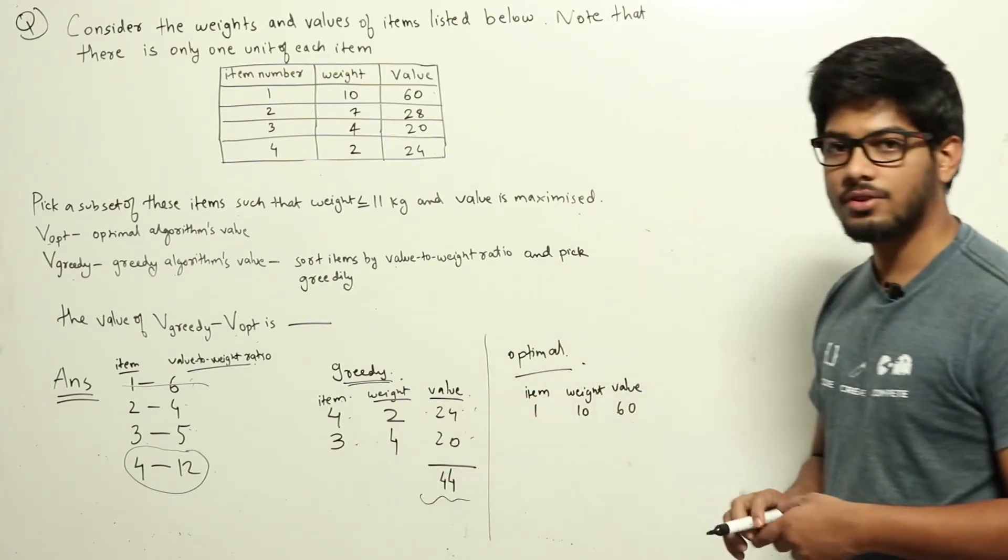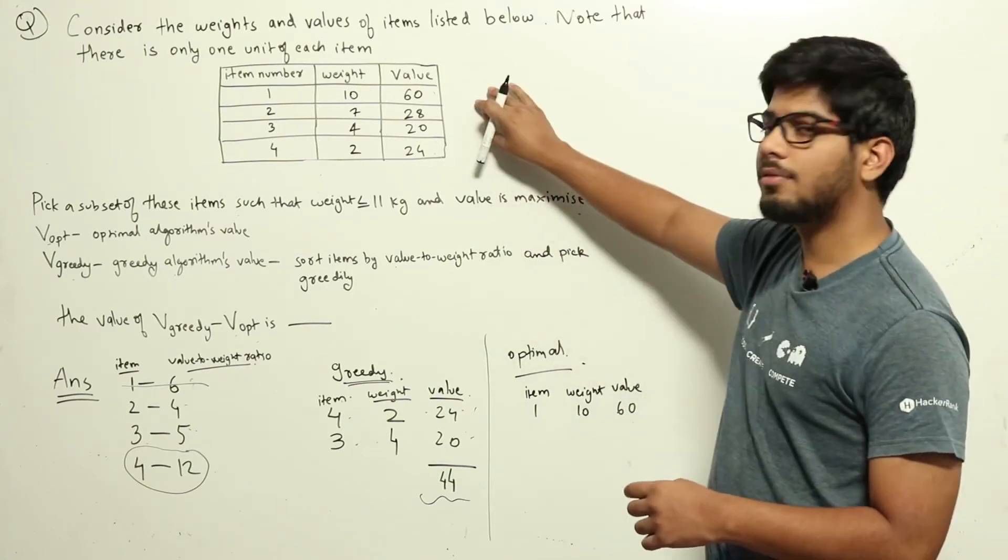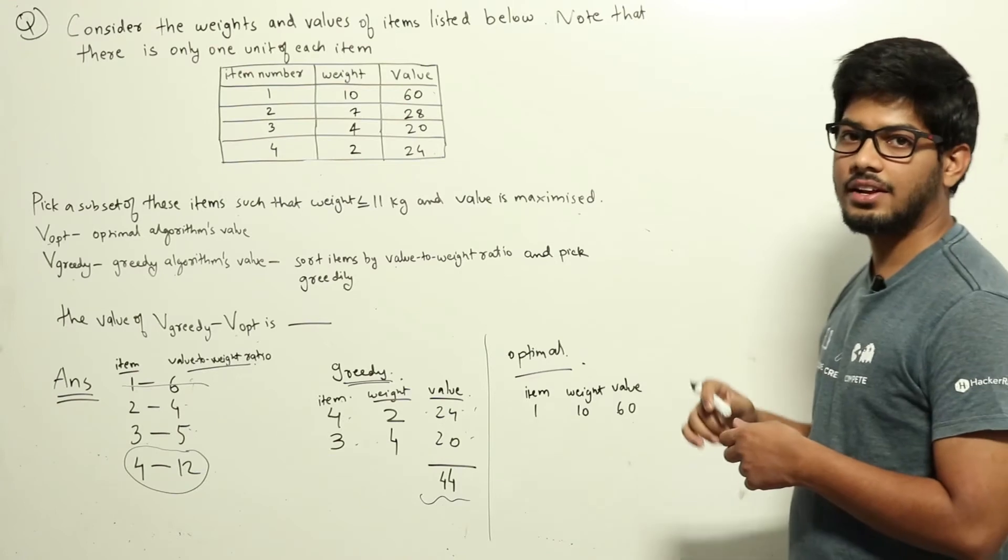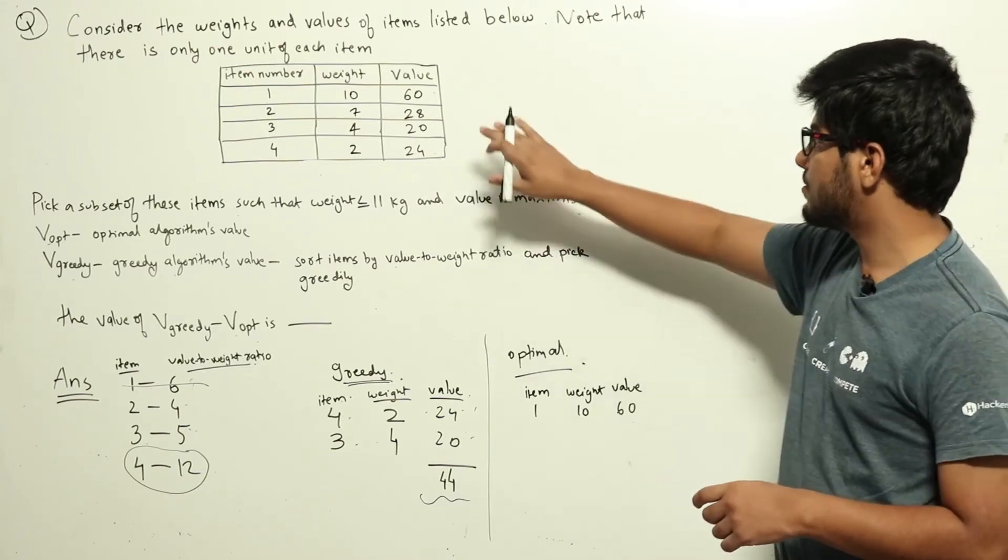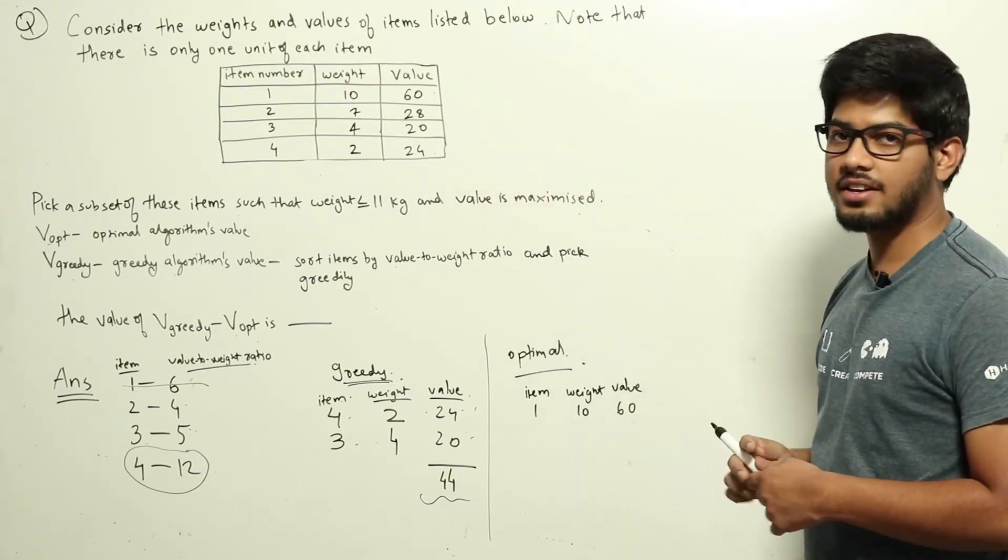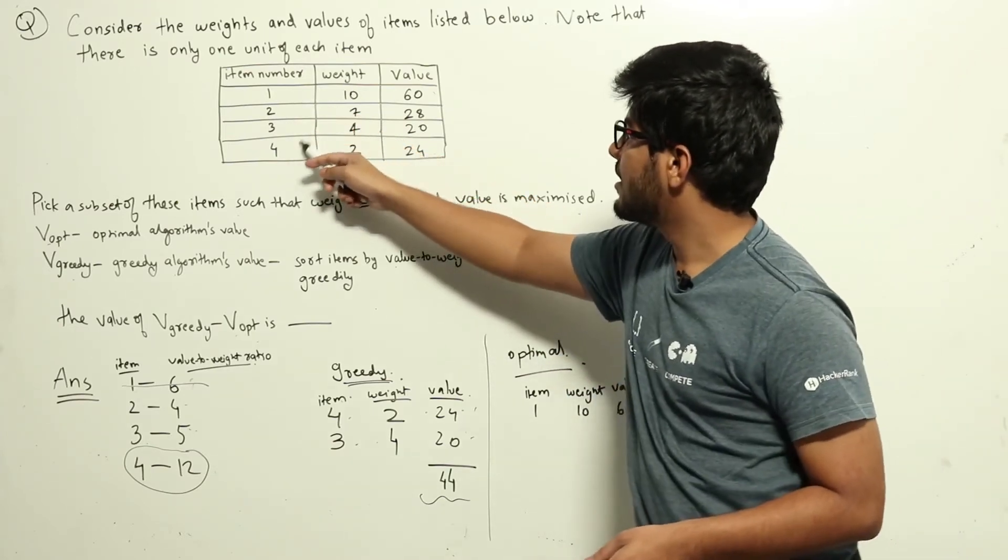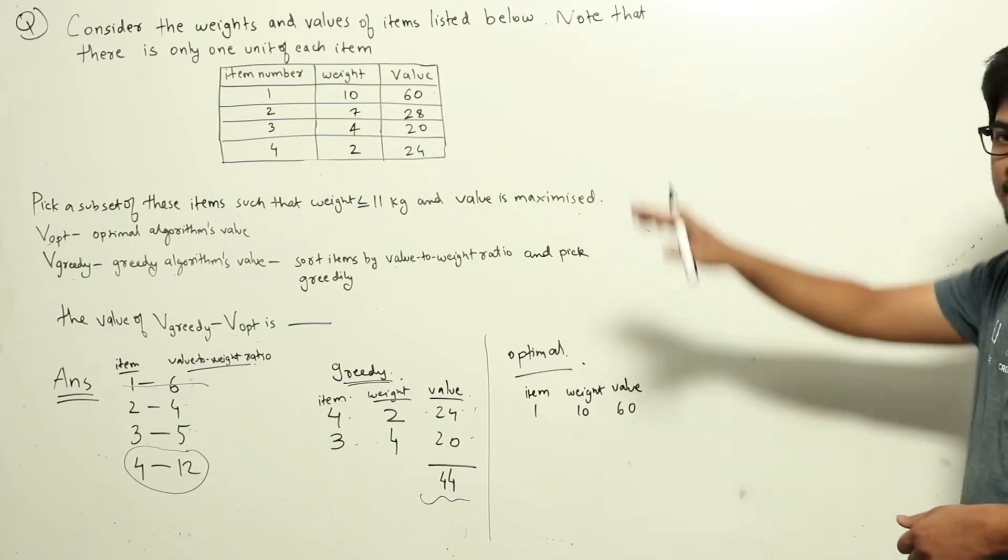So the greedy algorithm gives us these two items with a total value of 44. Now we need to find out what the actual maximum value is—we need to find the optimal value. The way to solve 0-1 knapsack is using dynamic programming, but here there are only four items, so we can try these out without actually writing the DP table.